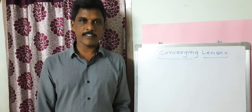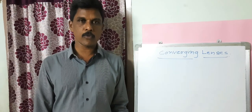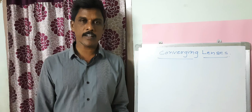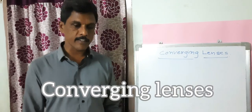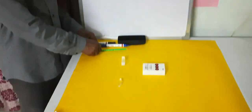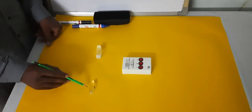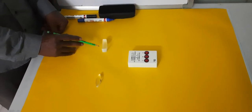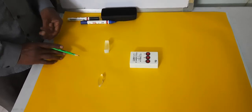Good evening to one and all. This is Shishkala the physics teacher. Today I am going to demonstrate an activity to understand converging lenses. The materials required are one convex lens, one plano-convex lens made of acrylic material, and one ray box.